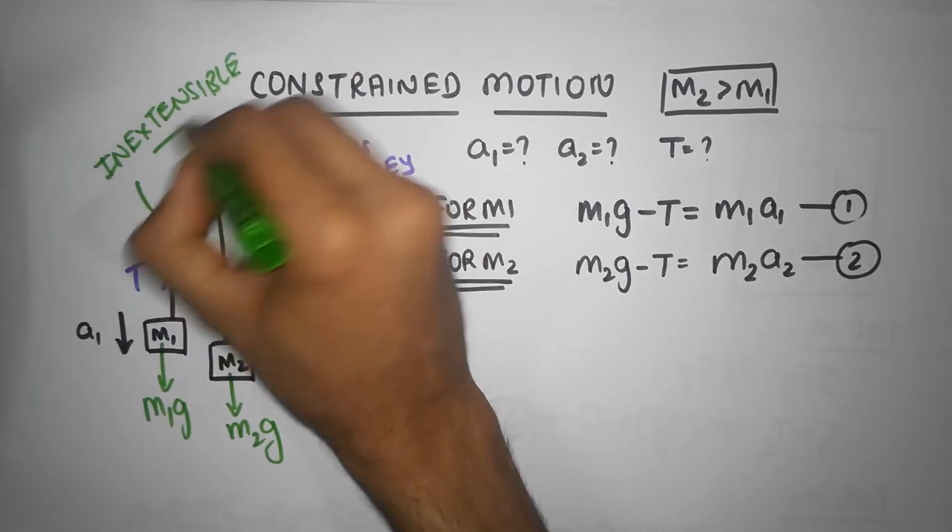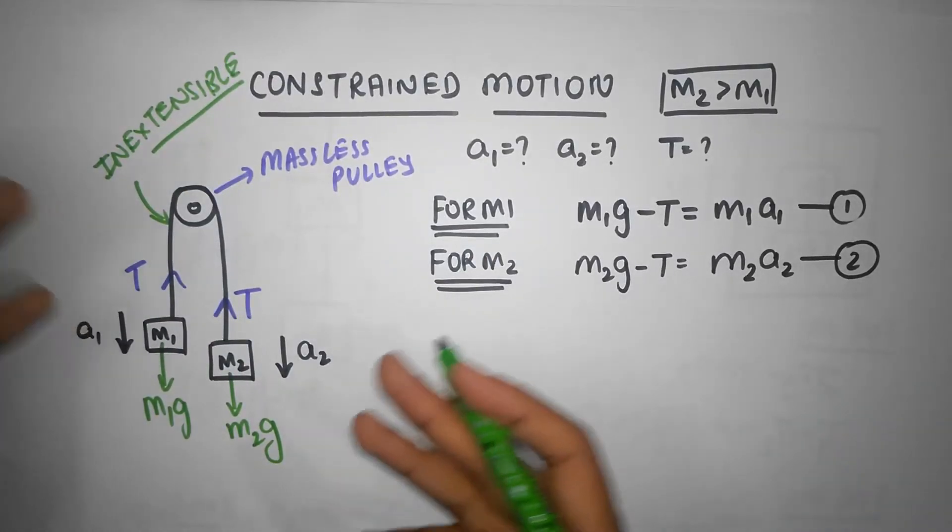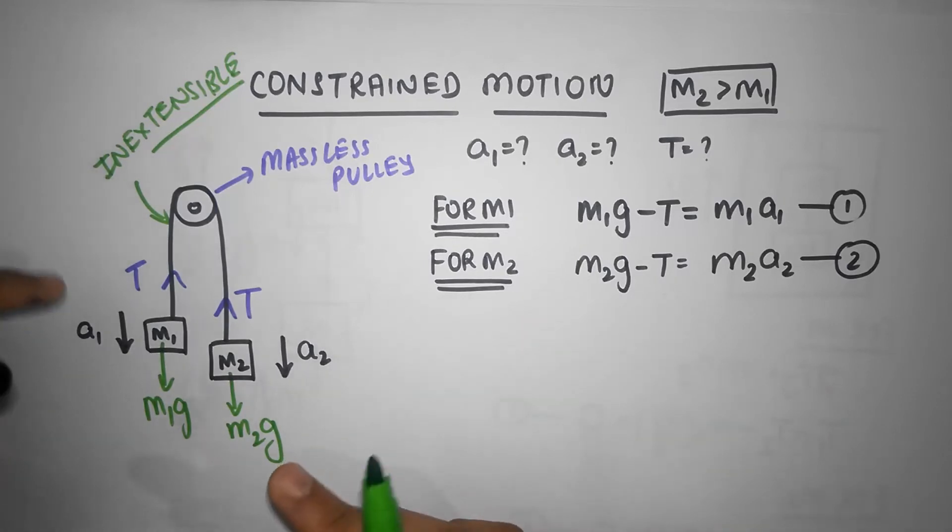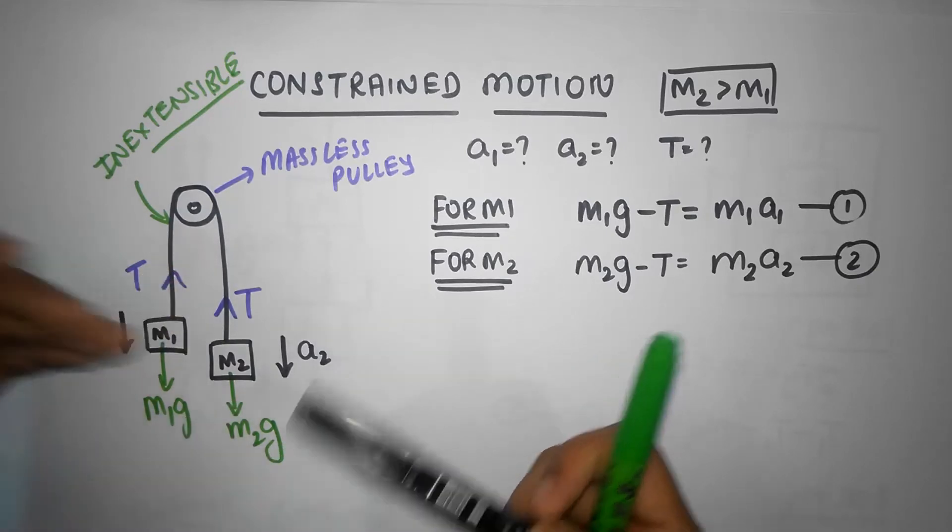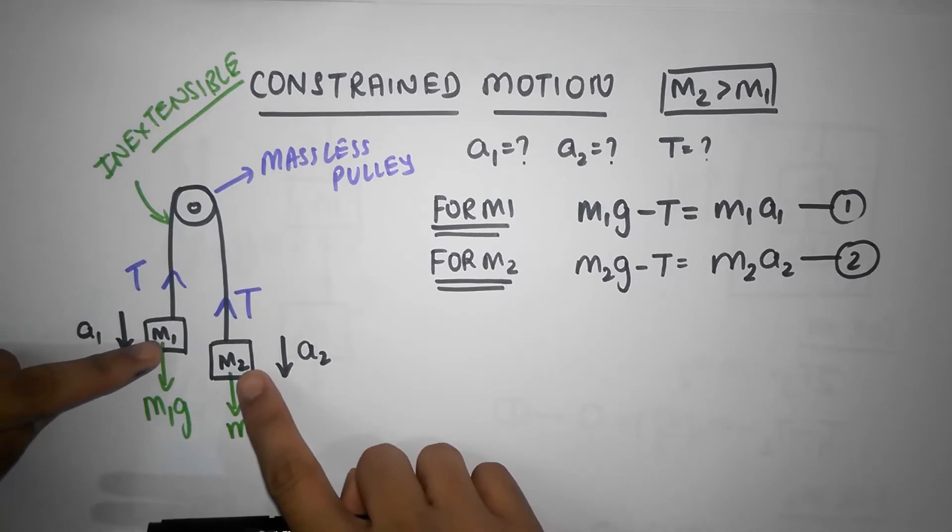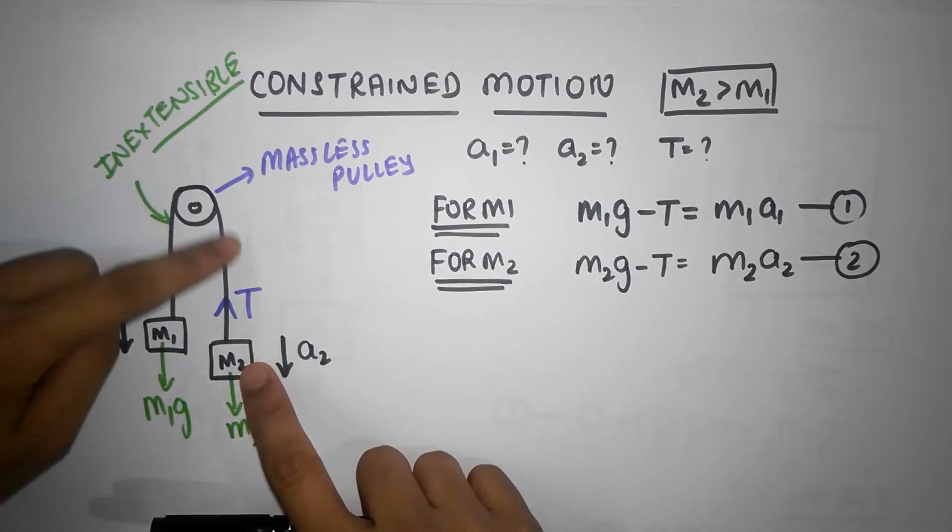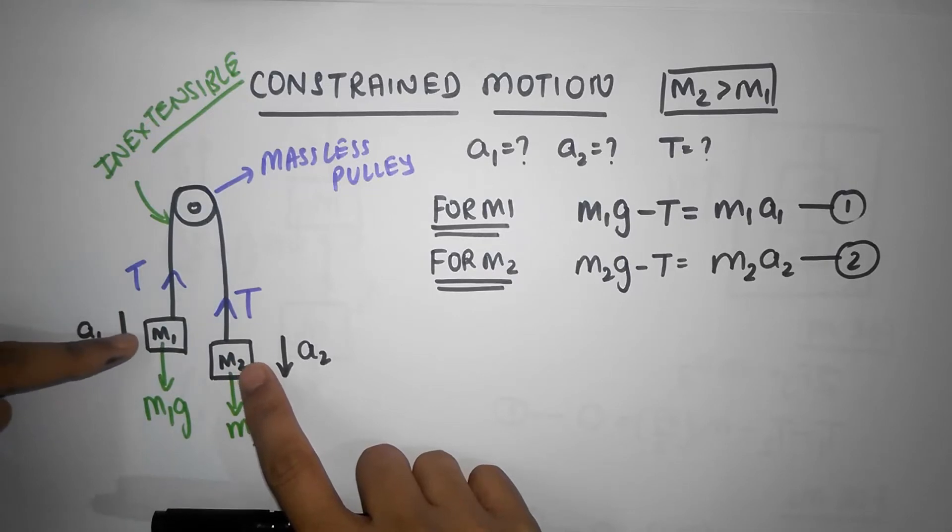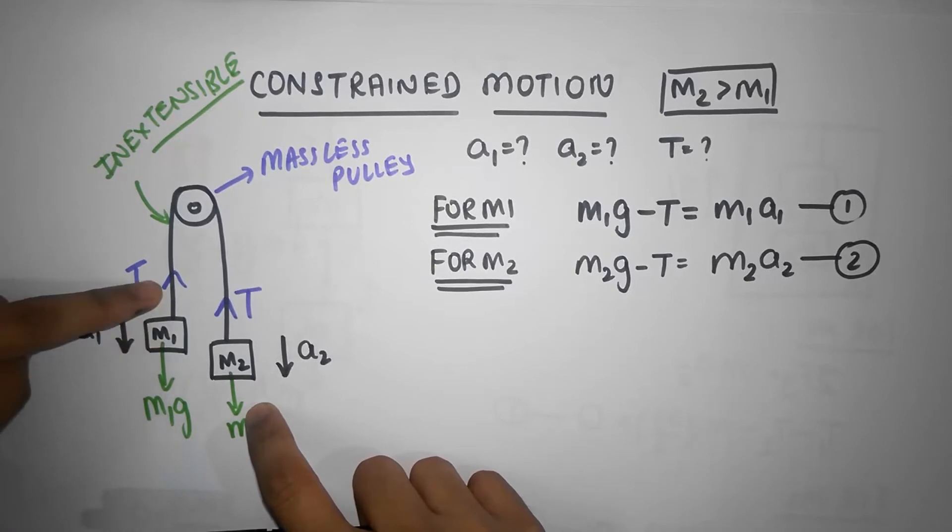Usually they should mention that in the problem, but even if they don't mention we're going to pretty much assume that the string is inextensible. Because of that it implies something very important. Since the length of the string has to remain a constant, if this guy goes down by some length, this fellow must go up by the same length.